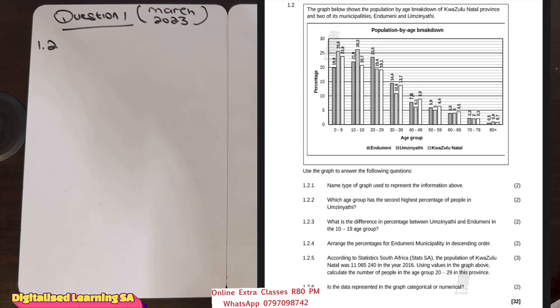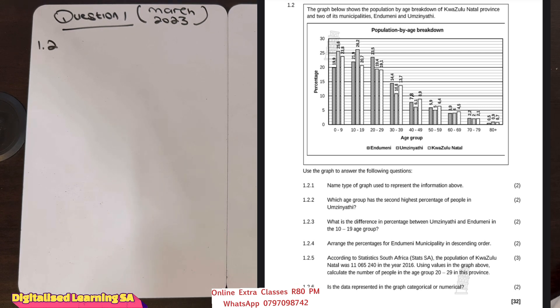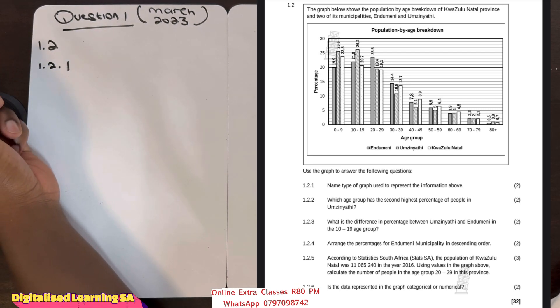In this video we will be answering question 1 of the Gauteng March 2023 SBA test. In our first question we are given a graph that we are going to use to answer the questions that follow. On our graph there is a short statement that we need to read first. The statement reads: the graph below shows the population by age breakdown of KwaZulu-Natal province and two of its municipalities, Ndomeni and MZ Nyati. Question 1.2.1 reads as follows: name the type of graph used to represent the information above.